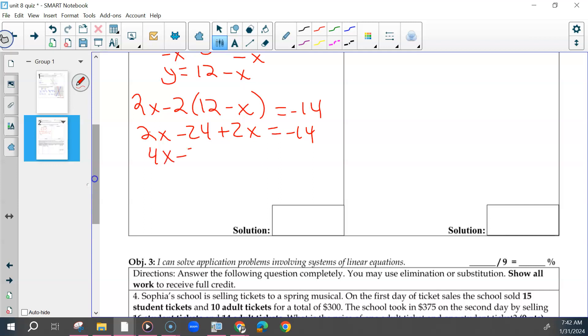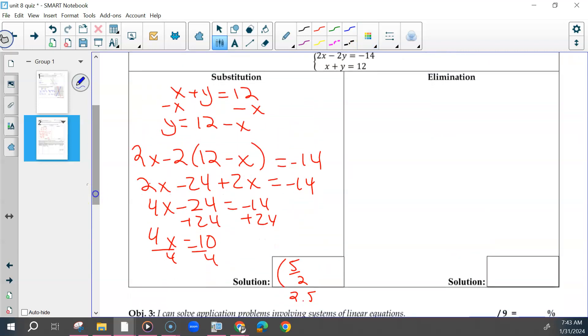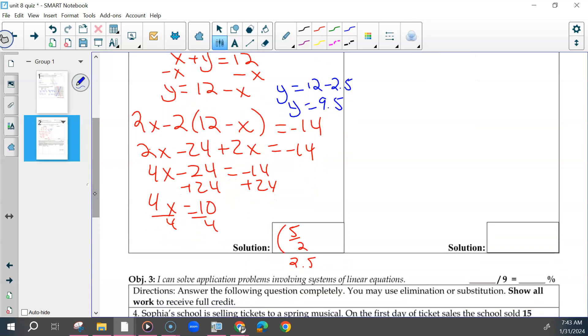So we would have 4x minus 24 equals negative 14. Add 24 to the other side. And then divide both sides by 4. So whether you got 5 halves or 2.5, either one, that was fine. Your answers could be decimal or fractions. And then take that number and put it back into one of your equations. This one would probably be the easiest to define your y. So that would be 19 halves or 9.5, or you could have had a mixture.